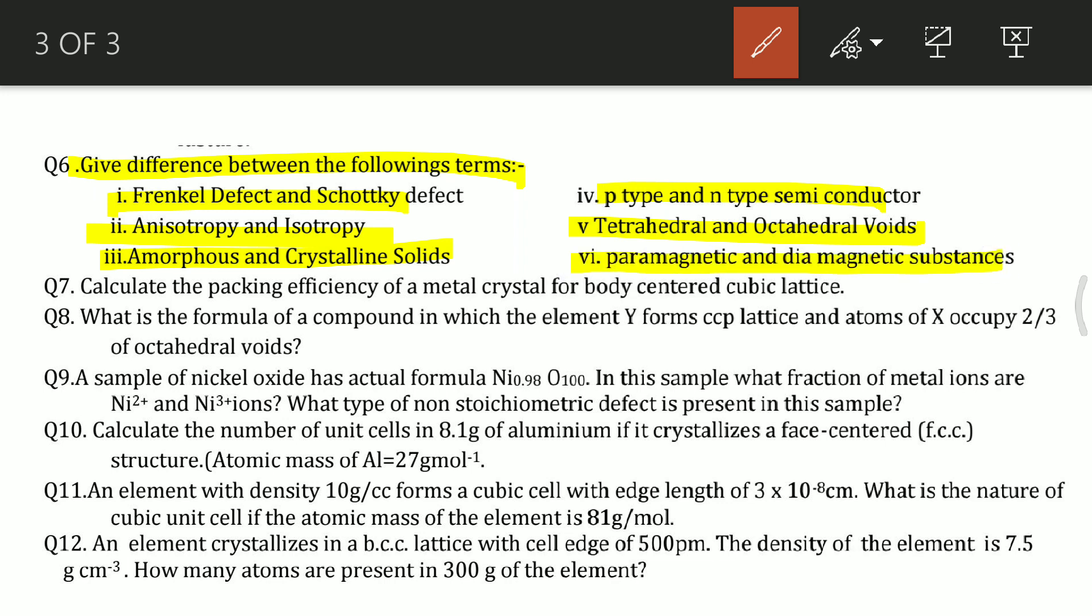P-type and N-type semiconductors, tetrahedral and octahedral voids, and paramagnetic and diamagnetic substances. Question number 7: calculate the packing efficiency of a metal crystal for BCC lattice. Question 8: what is the formula of a compound in which element Y forms a CCP lattice and X occupies two-thirds of octahedral voids? Make sure you revise these. Every type of question and numerical is included from question 8 to question 12.